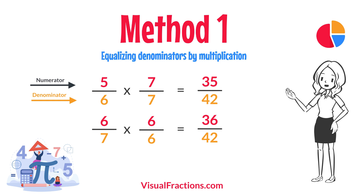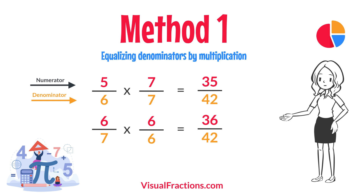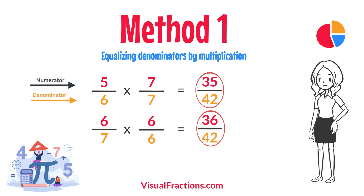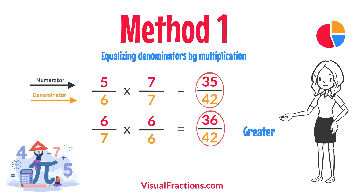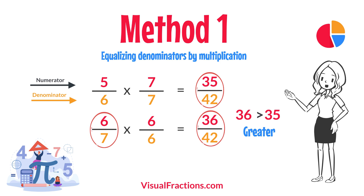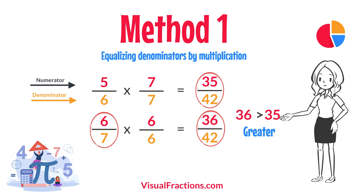Now, with both fractions expressed with a denominator of 42, we can easily compare them. 36 forty-twos is greater than 35 forty-twos, so 6 sevenths is the larger fraction.